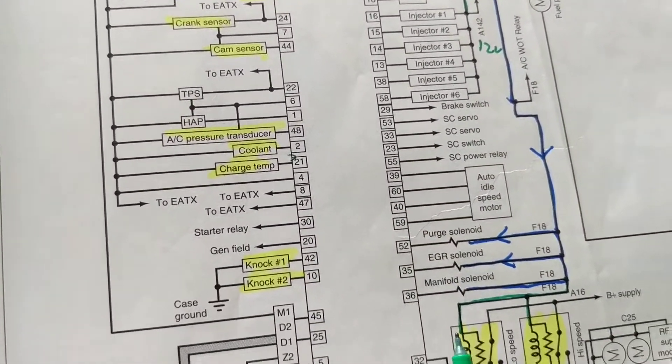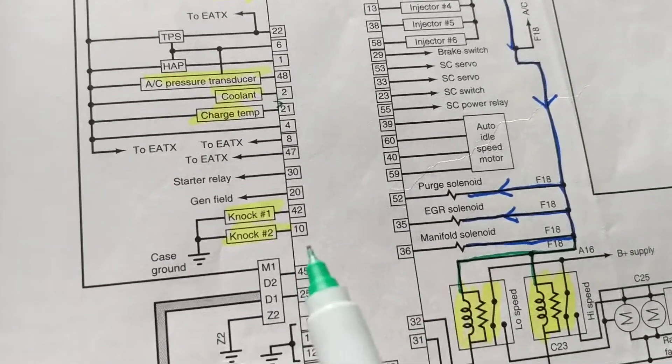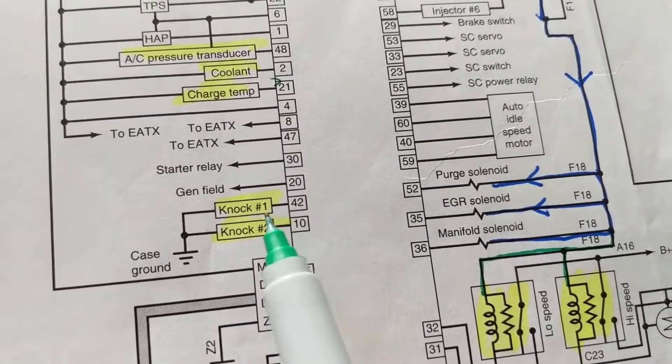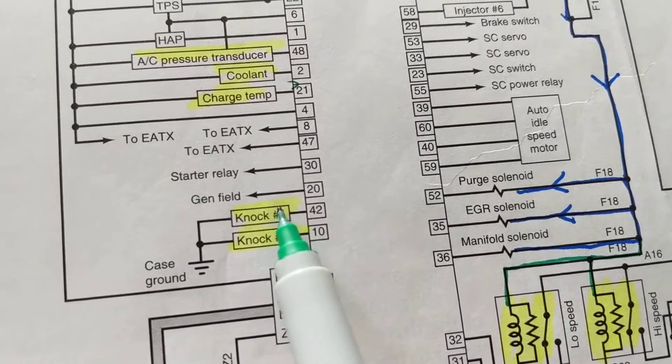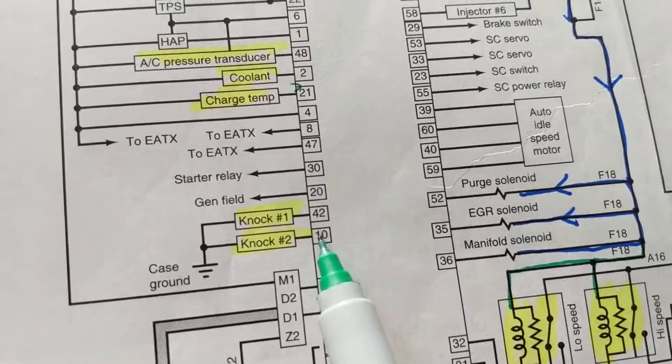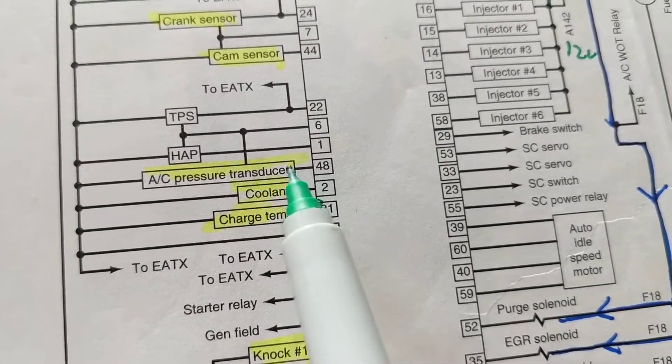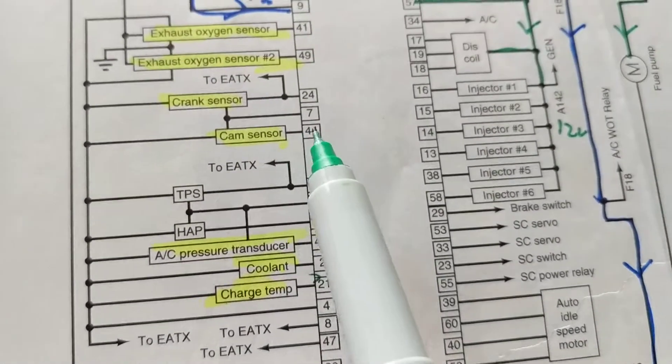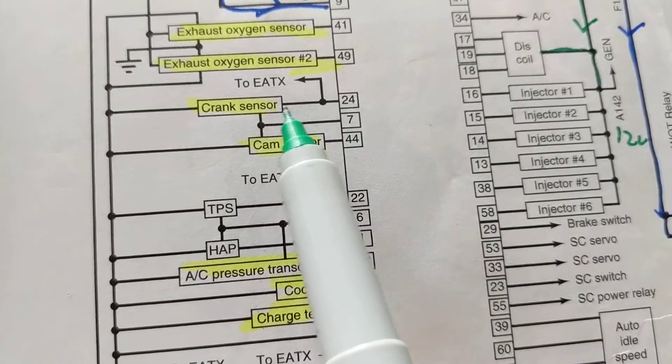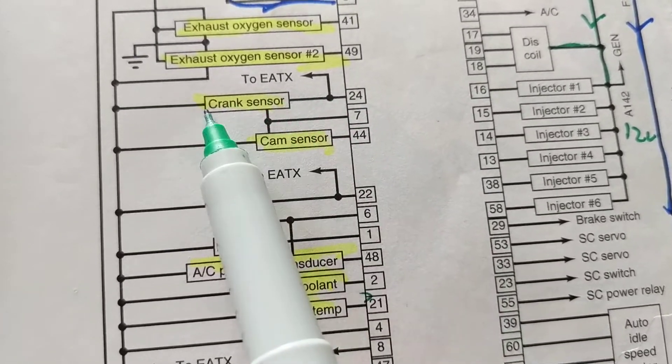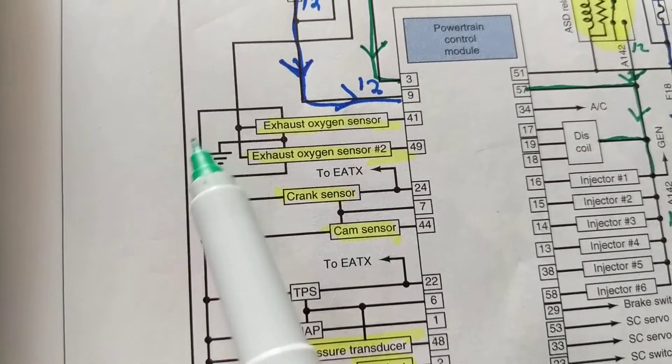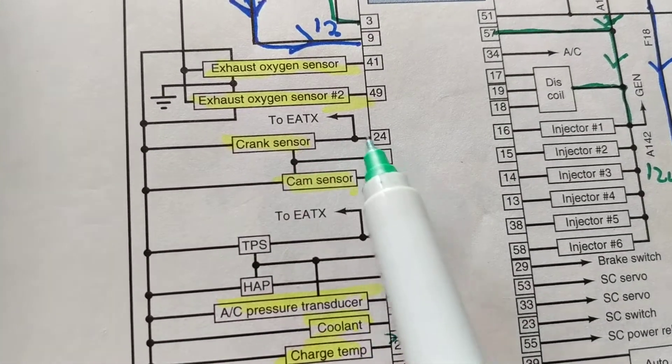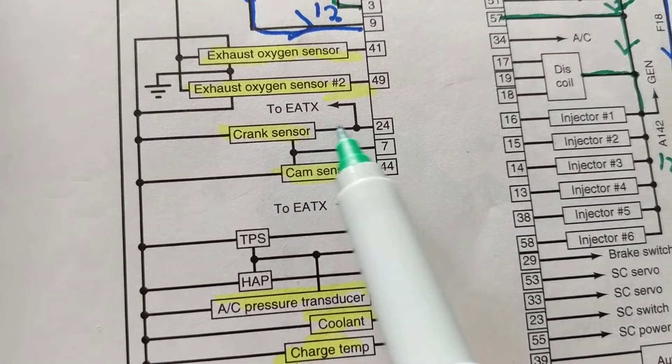Okay, so knock sensor number one, knock sensor number two. This one goes to pin 42, this one goes to pin 10. Again, the signal input goes here. Signal inputs go here to the computer. Whenever you see the sensor going here, that means sometimes it's given—if it's two wires, see this is two wires—that means that one wire is getting a ground, that means the other wire is getting the five volts.